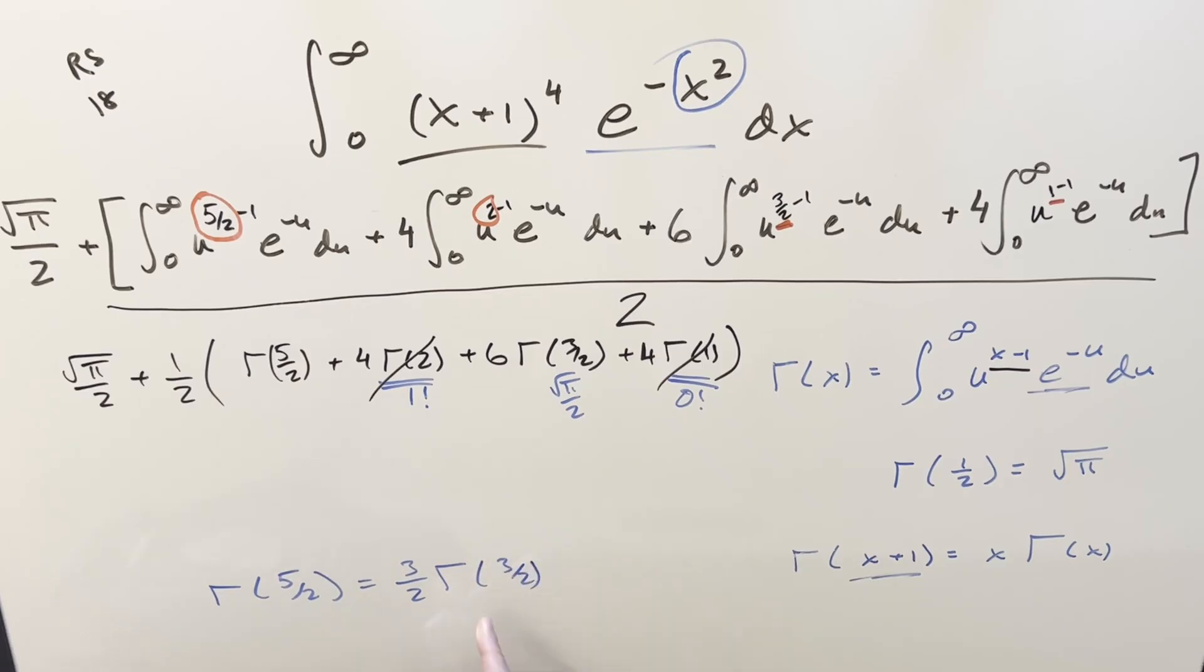But we just found that value to be square root of pi over 2. So plug that back in here, and we get 3 square root of pi over 4.